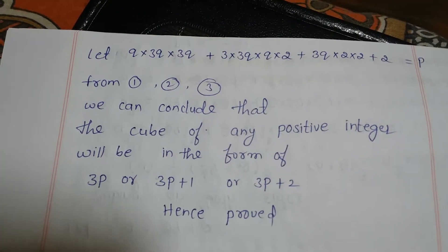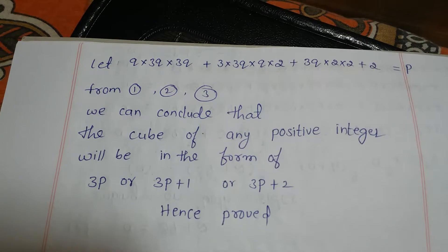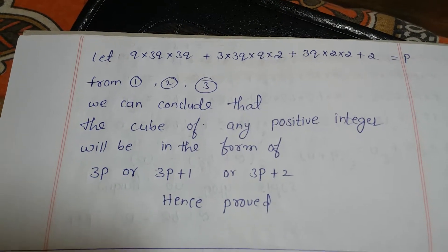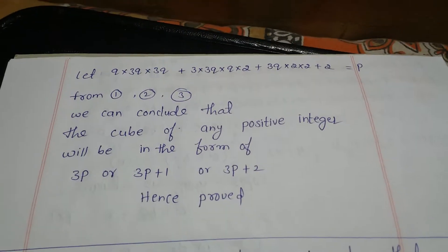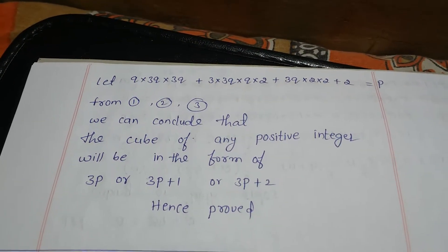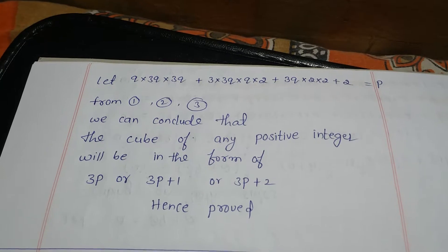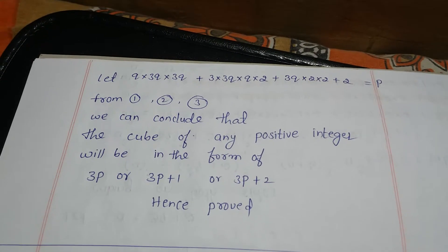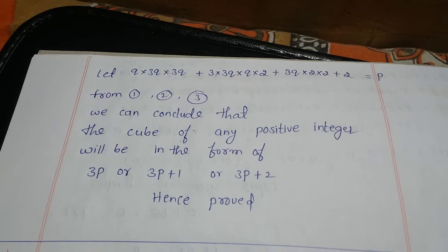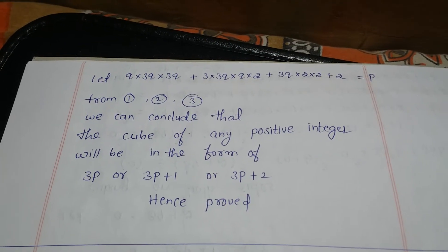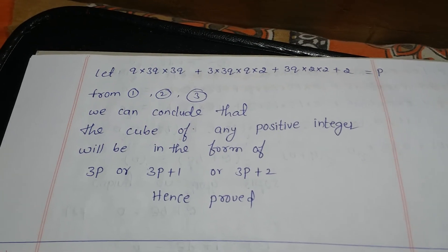From equations 1, 2, and 3, we can conclude that the cube of any positive integer is in the form of 3P, or 3P plus 1, or 3P plus 2. Hence proved. Thanks for watching. Please subscribe to my channel and click the bell button for regular updates. Share this information with your friends so they can also benefit from this channel.